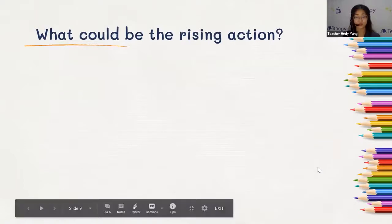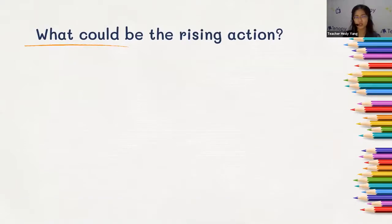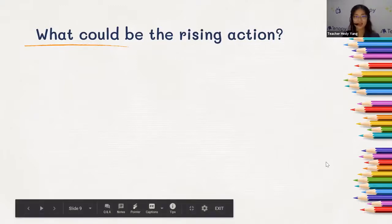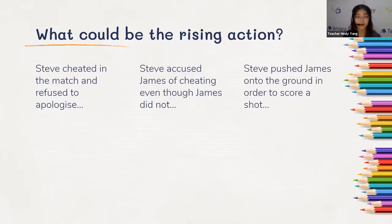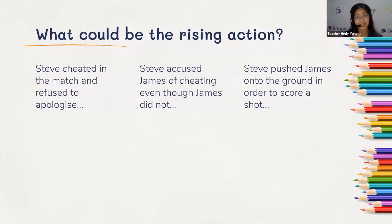So, in this case, what could be the rising action? What could be some reasons why James suddenly punched Steve in the face? For example, maybe Steve cheated in the match and refused to apologize. If I am James and my friend cheated, I would be very mad, and I might punch him in the face. Similarly, Steve could have accused James of cheating even though James did not — James was playing by the rules, but Steve called him a cheater. That would explain why James might want to punch him.